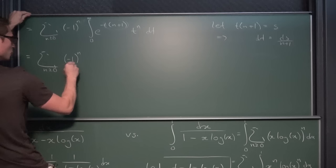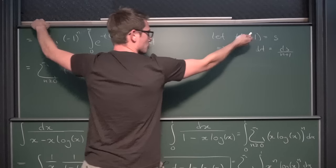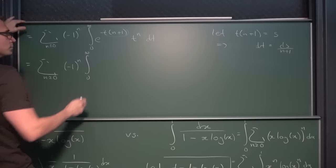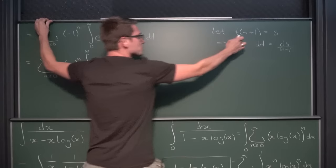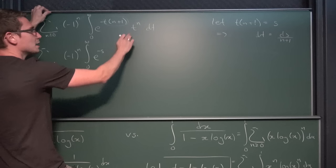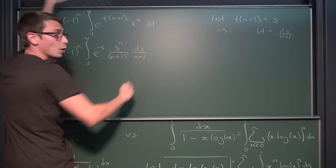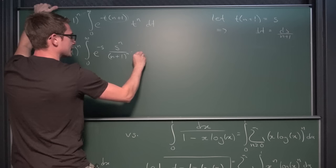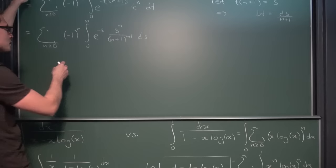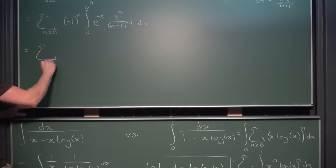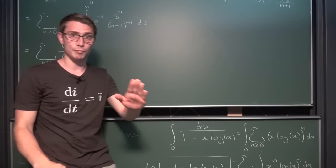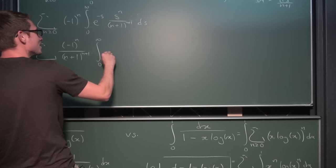Then we get e to the negative s, because we substitute for s, times t which is s divided by n+1. So s to the nth power divided by n+1 to the nth power, and ds divided by n+1. Overall, we can bring n+1 and n+1 to the nth power together to just n+1 to the n+1, which is very nice. We can bring this 1 over n+1 to the n+1 to the front, giving us the infinite series where n ≥ 0 of negative 1 to the nth power divided by n+1 to the n+1 power, times the integral from 0 to infinity of s to the nth power times e to the negative s ds.